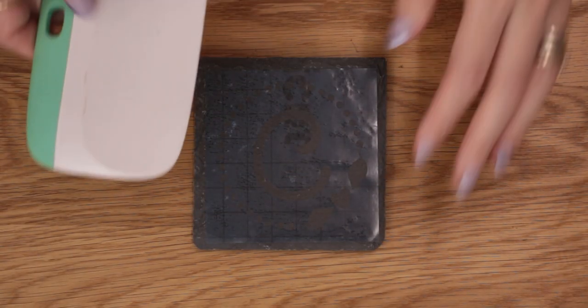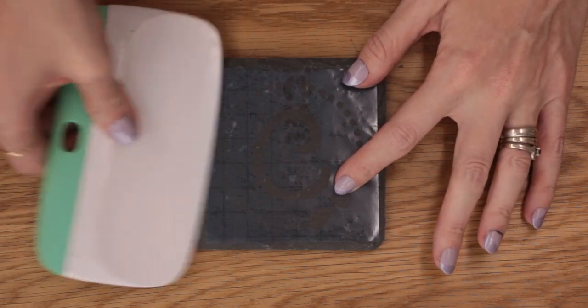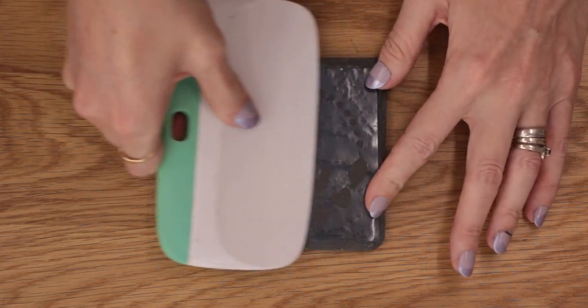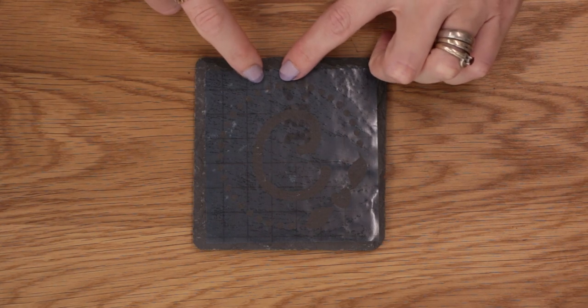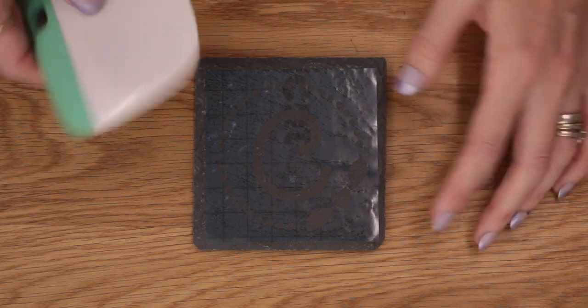You then want to come in with your scraper and use the flat edge to really work that into the slate. The most important thing is that we have this really firmly stuck down to our slate or whatever our surface is.